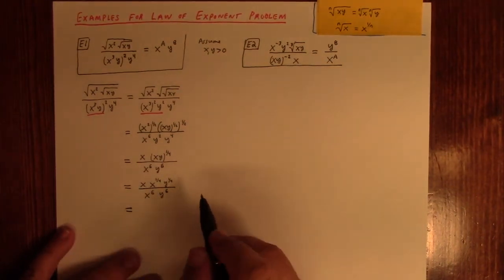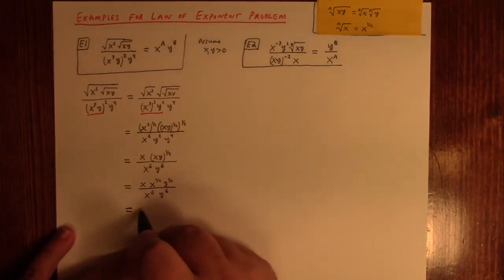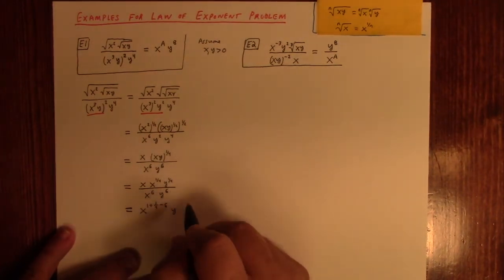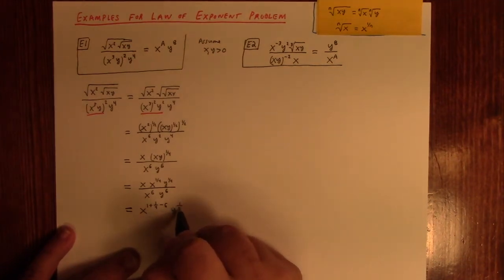And now I can just collect everything together, right? I'll write x here. I've got x to the, what? 1 plus 1 fourth. And I get a minus 6 from that one downstairs. And then I've got y to the 1 fourth. Minus 6. Right?